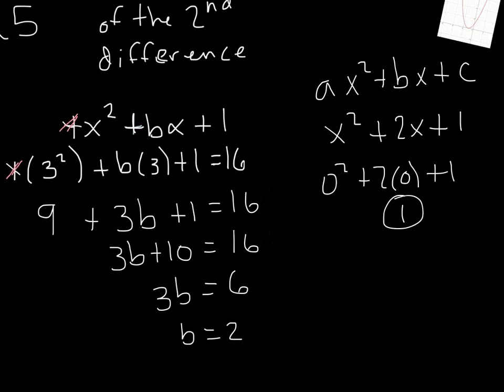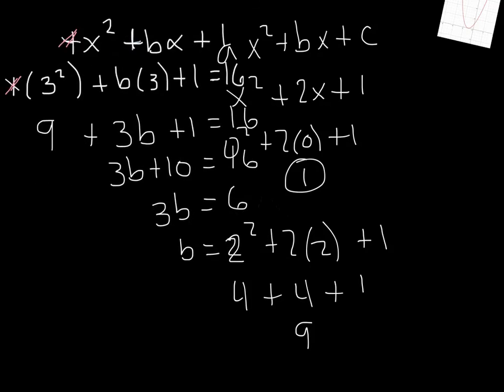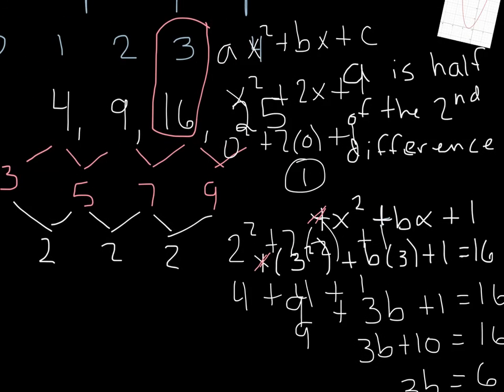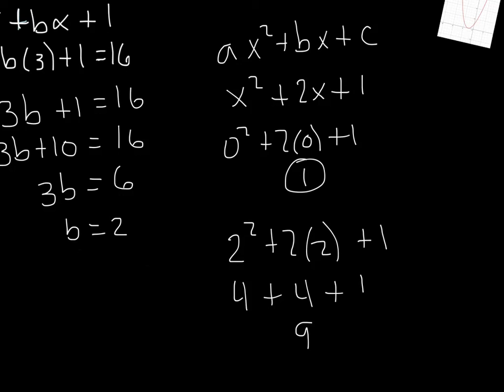And that's what we expect from what we had talked about earlier. If we plugged in 2 for the x's, so the second term, we would have 2 squared plus 2 times 2, I'm just plugging in 2 for x, I'm going to end up with 4 plus 4 plus 1, which is 9. And if we look over here, when x was 2, we should have gotten 9. So the equation, hey, this equation is working out nicely. And so I've just tested it.